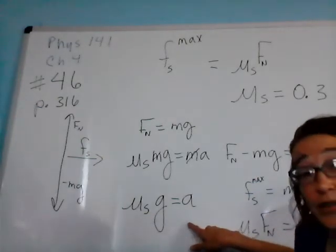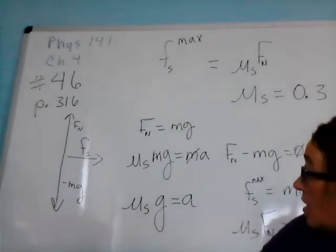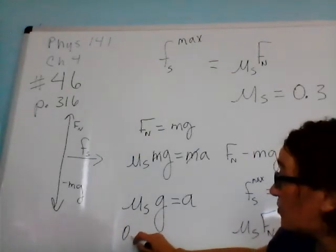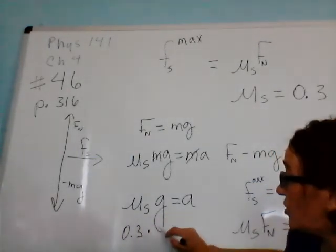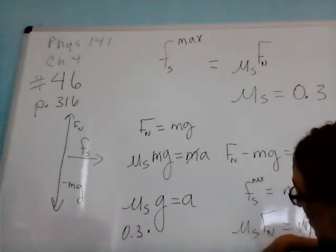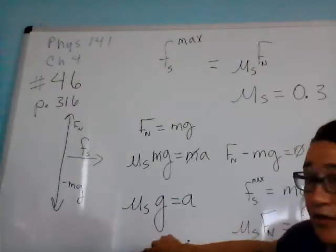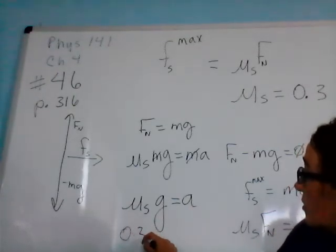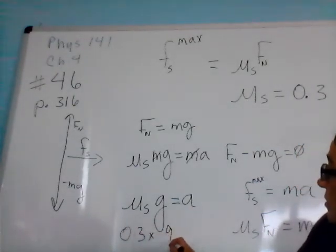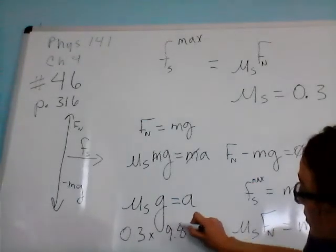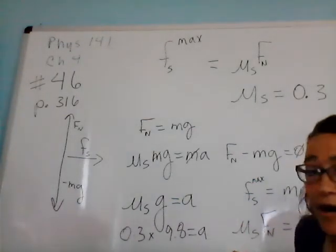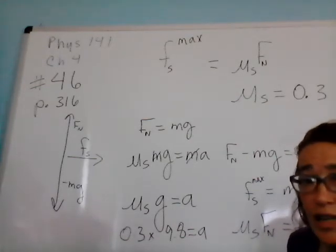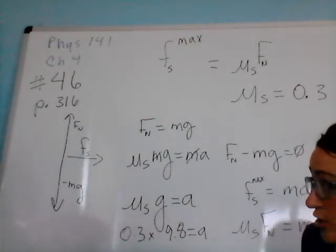If we want to plug numbers in here and get a solution for this, that static friction coefficient is 0.3. We're going to multiply that by g, which is 9.8. At this point, I'm going to let you guys plug that into your calculator.